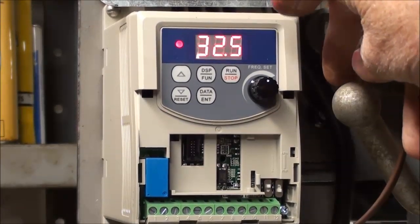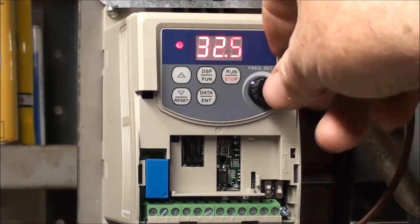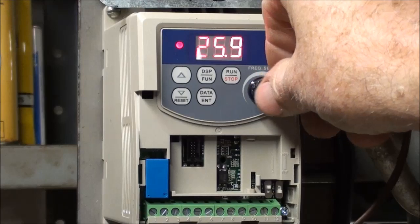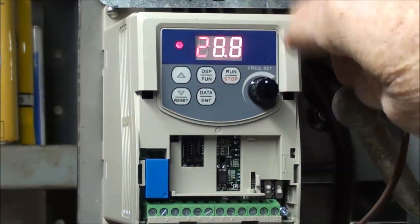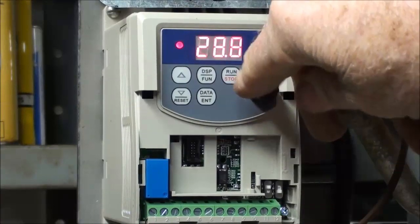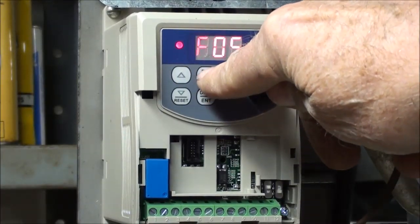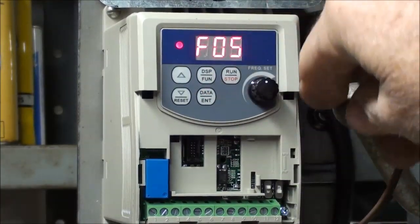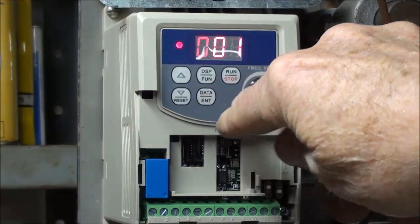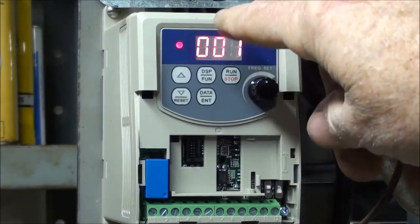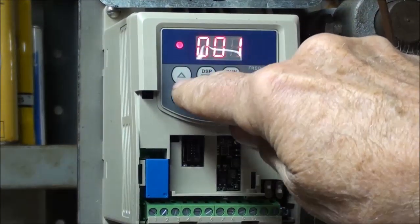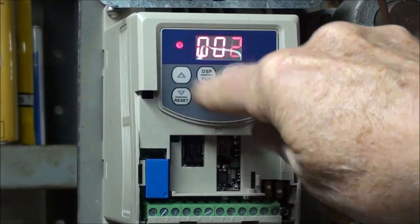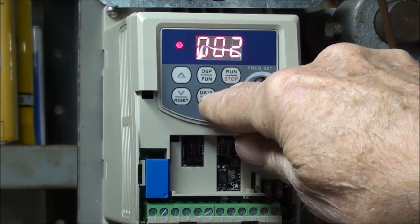Next, I need to program the VFD so that the potentiometer is no longer the one on this control panel, but an external one. So in order to do that, if you remember, the function is 05, 05, now 0, 0, 1 again is for this potentiometer, but it's 0, 0, 2 for the external potentiometer.